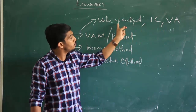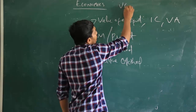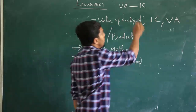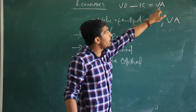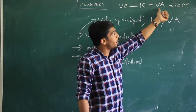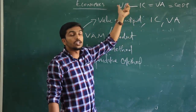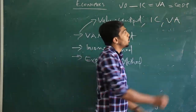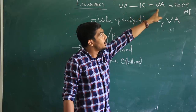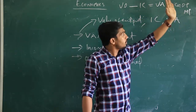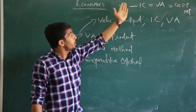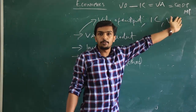Value added is the difference between value of output and intermediate consumption. Representing value of output as VO and intermediate consumption as IC: VO minus IC gives us value added. This value added is exactly equal to GDP at market price — the gross domestic product of the economy. After finding the value added equal to GDP at market price, we can easily find out the national income. So the three components of the value added method are: value of output, intermediate consumption, and value added, where value added equals GDP at market price.